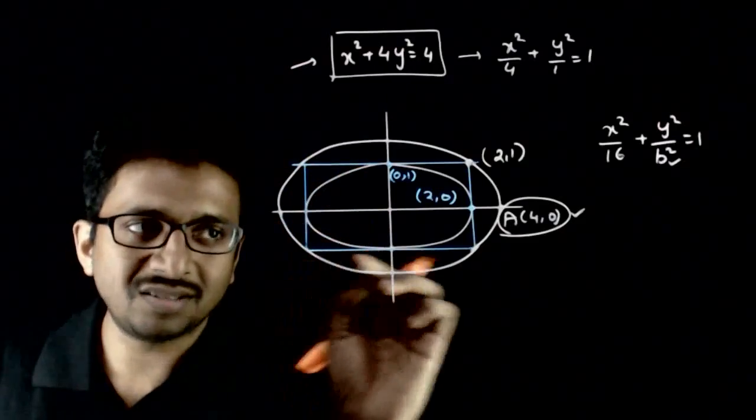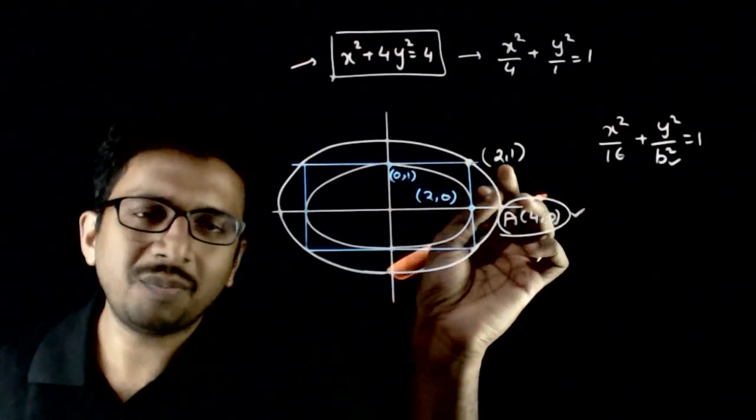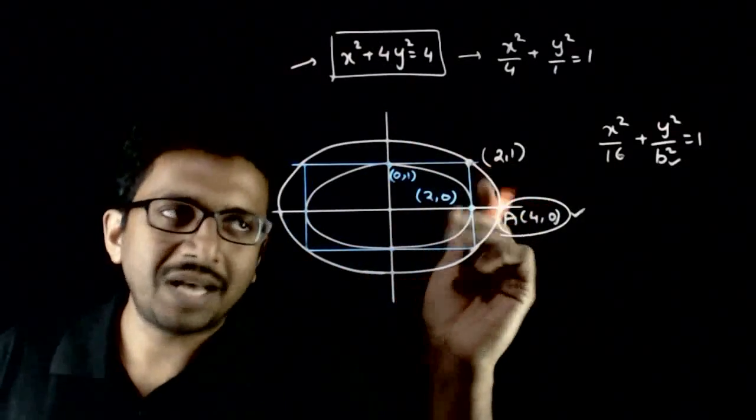It also has to pass through these three points, but if it passes through (2,1), by symmetry it will pass through all the other points. So it has to pass through (2,1).